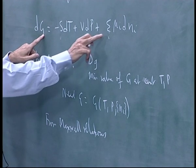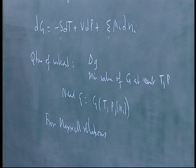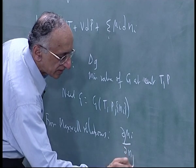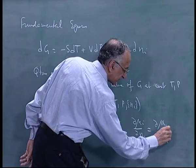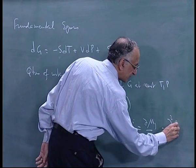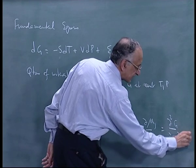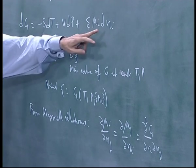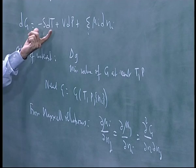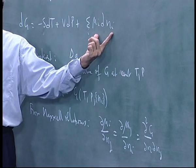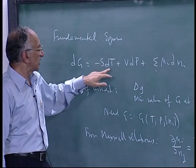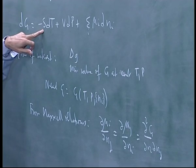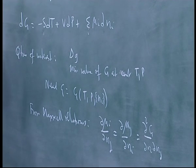If I keep all variables constant except say n₁ and n₂, I get equations like ∂μᵢ/∂nⱼ, and both are equal to ∂²G/∂nᵢ∂nⱼ. If you want S with respect to nᵢ, you keep S dT and μᵢ dnᵢ alone with all others constant. Then the Maxwell relation gives you ∂²G/∂T∂nᵢ = ∂S/∂nᵢ, which equals the derivative of μᵢ.